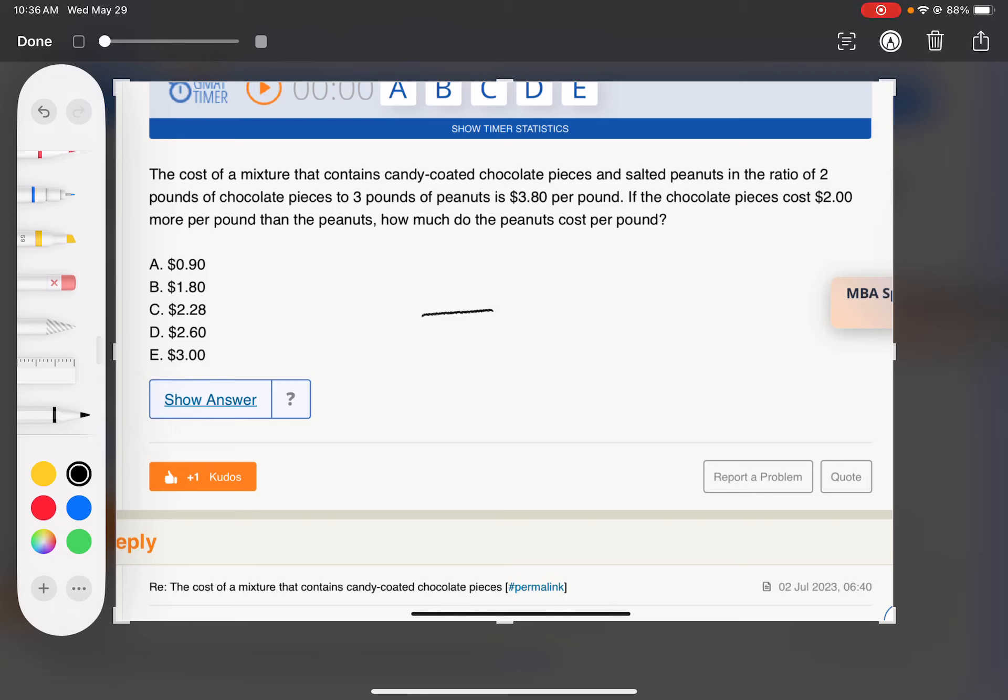Let's think about the overall average formula. We have a total of five pounds at $3.80 per pound. Up top we got three pounds of peanuts and